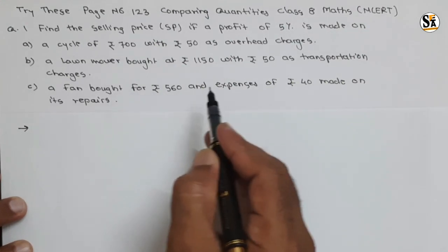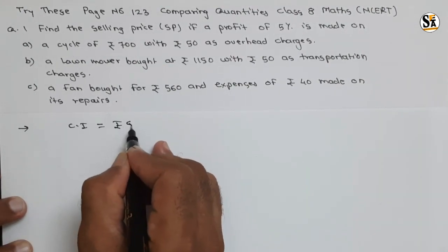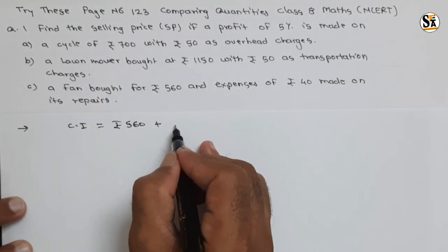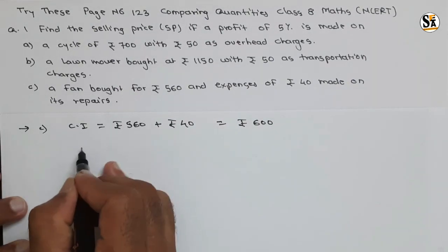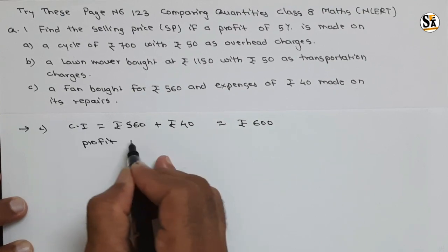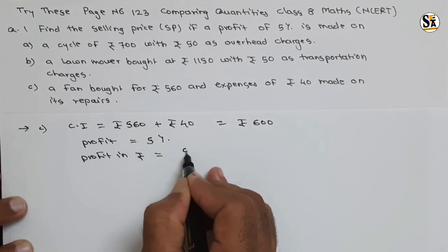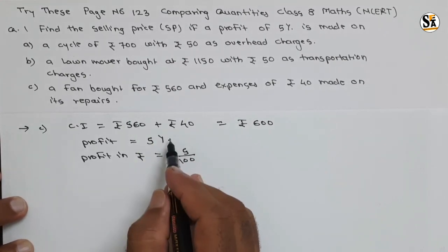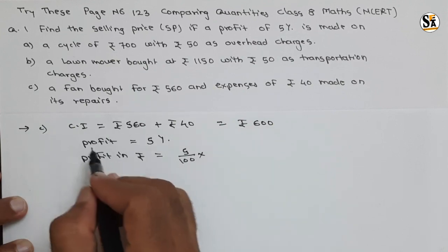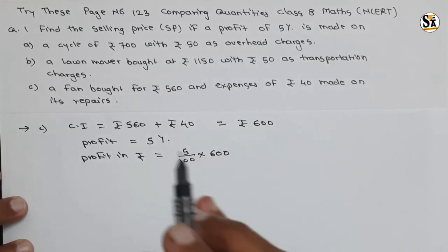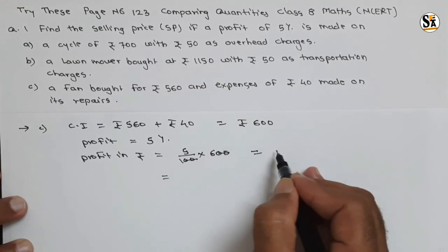Now Part C: a fan bought for rupees 560 with expenses of rupees 40 made on its repair. Total cost price will be rupees 560 plus repair expenses of rupees 40, giving rupees 600. Profit is 5 percent. Profit in rupees equals 5 divided by 100 — meaning rupees 5 for each 100 — multiplied by 600. Solving: the zeros cancel and we get a profit of rupees 30.